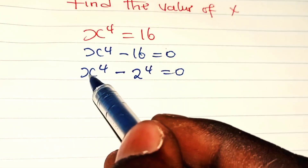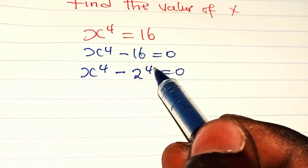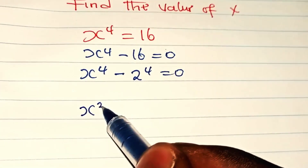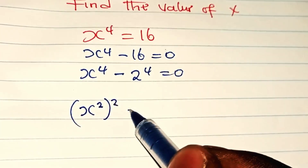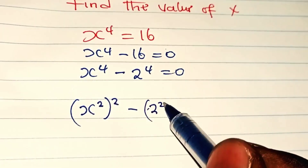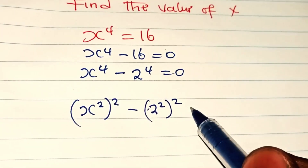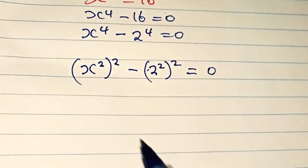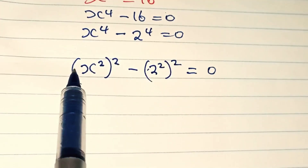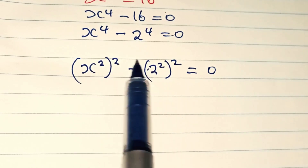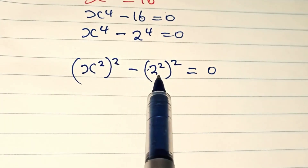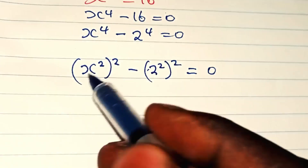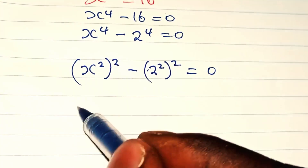So, we can also write x to the power of 4 minus 2 to the power of 4 as x squared, squared minus 2 squared, squared, which is equal to 0. If you look at this, we have a difference of squares here: x squared, squared minus 2 squared, squared.